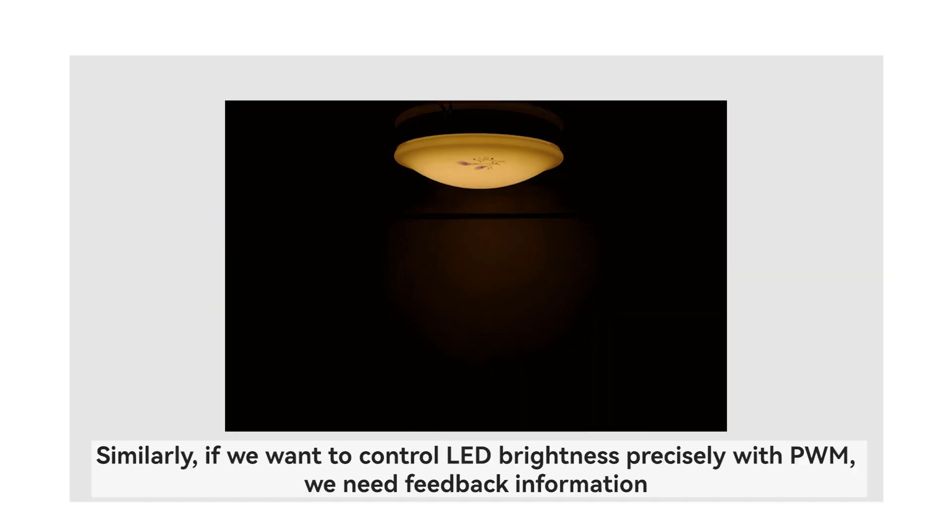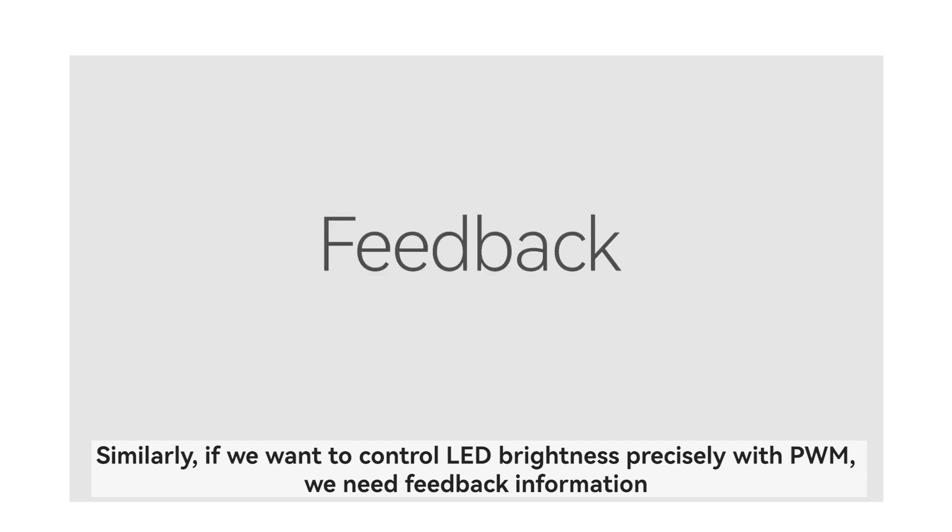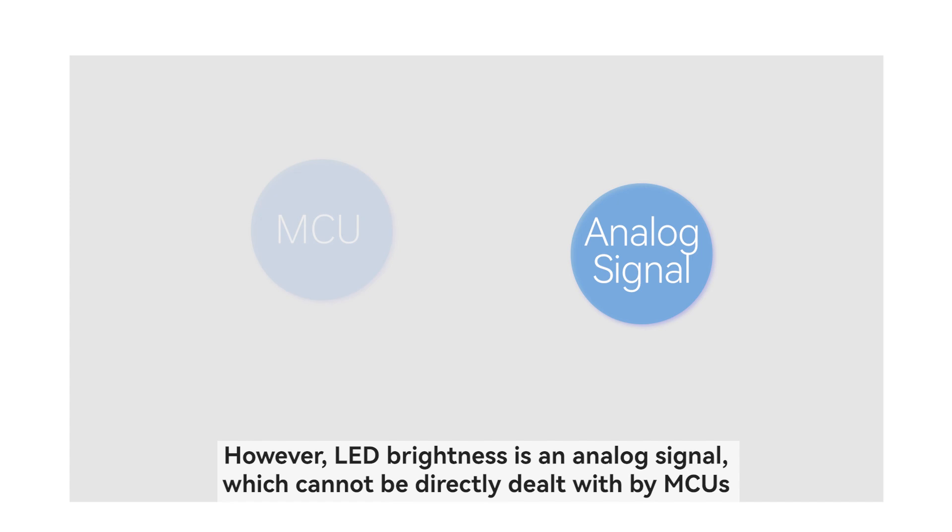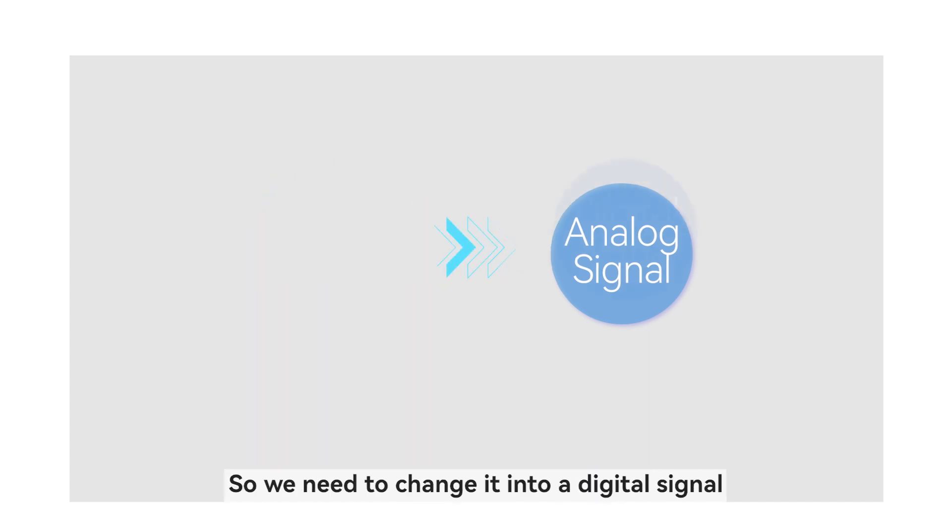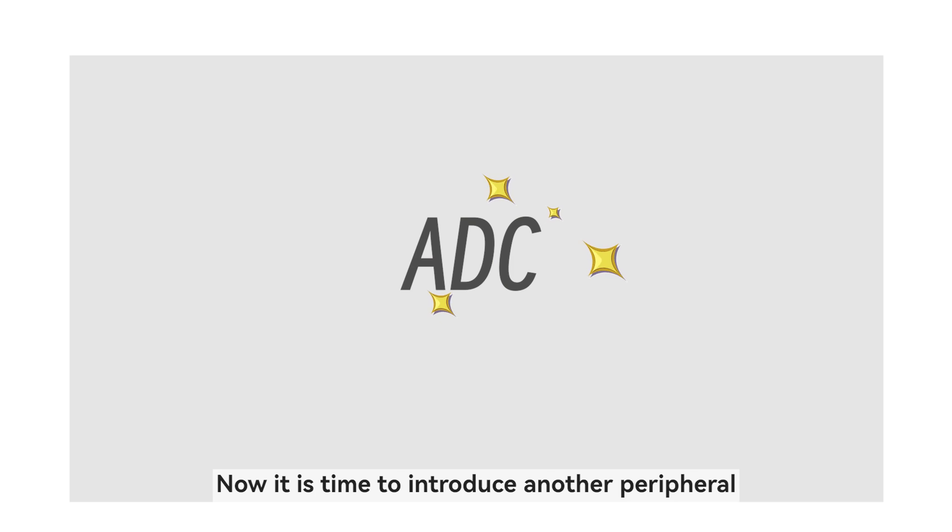Similarly, if we want to control LED brightness precisely with PWM, we need feedback information. However, LED brightness is an analog signal, which cannot be directly dealt with by MCUs. So we need to change it into a digital signal. How can we change the analog signal into a digital signal? Now it is time to introduce another peripheral.